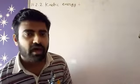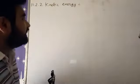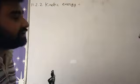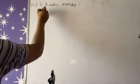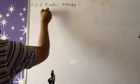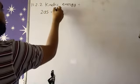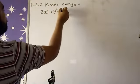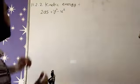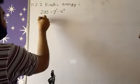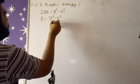Now we are deriving the formula for kinetic energy. Earlier we discussed the third equation of motion which is: 2As = v² minus u². If I solve for S, then S = (v² minus u²) upon 2A.